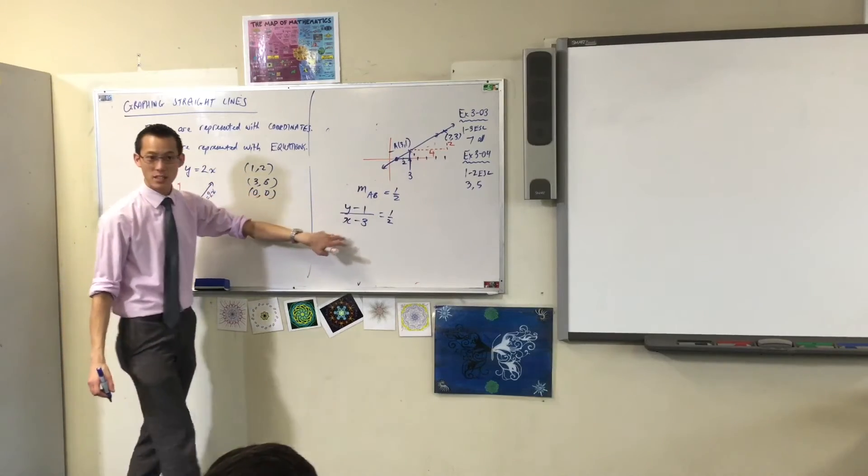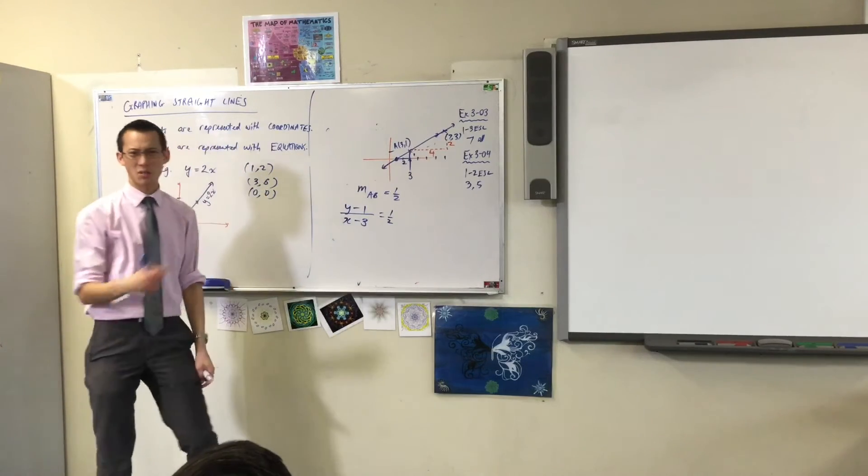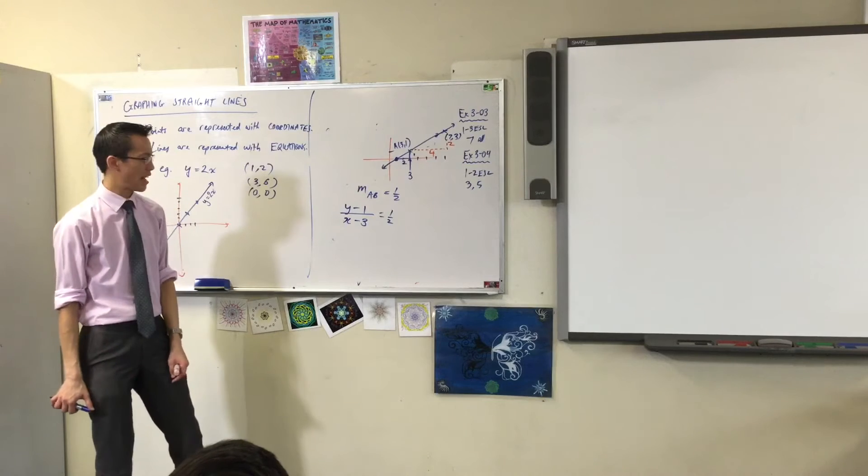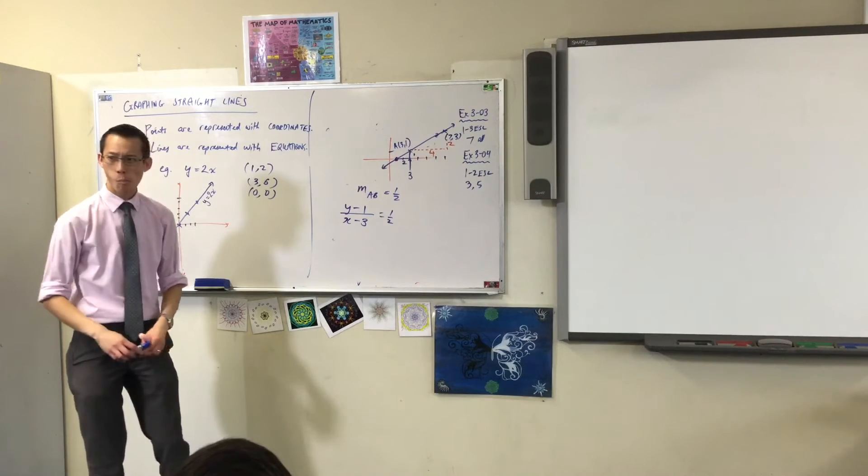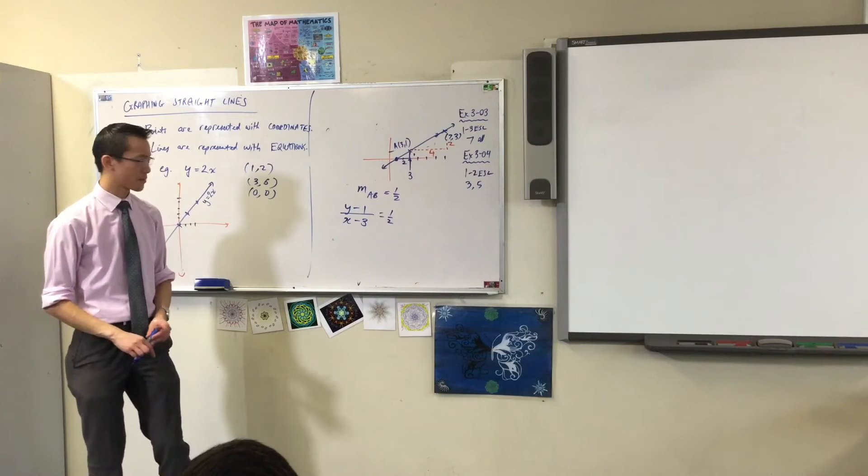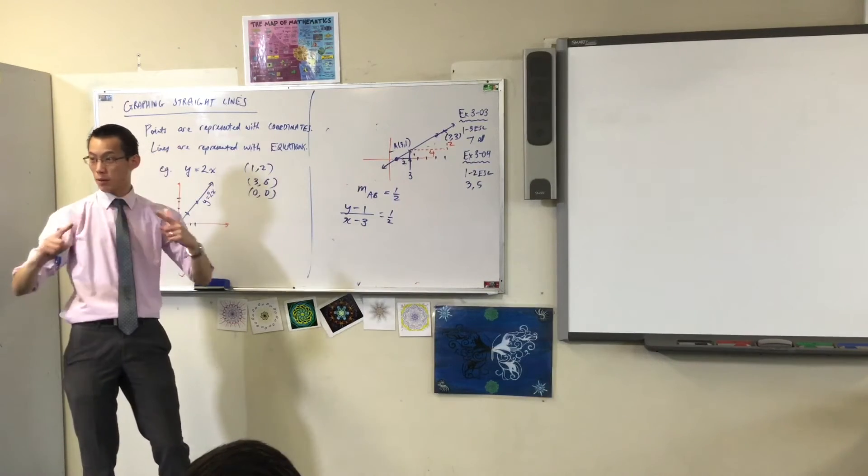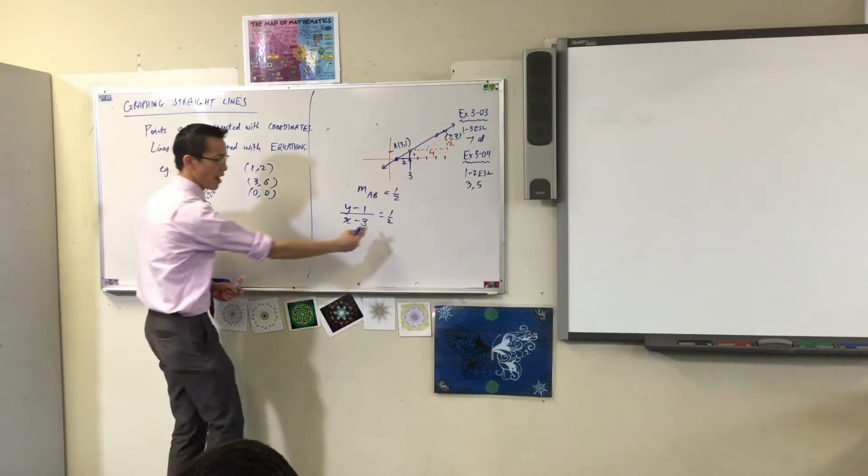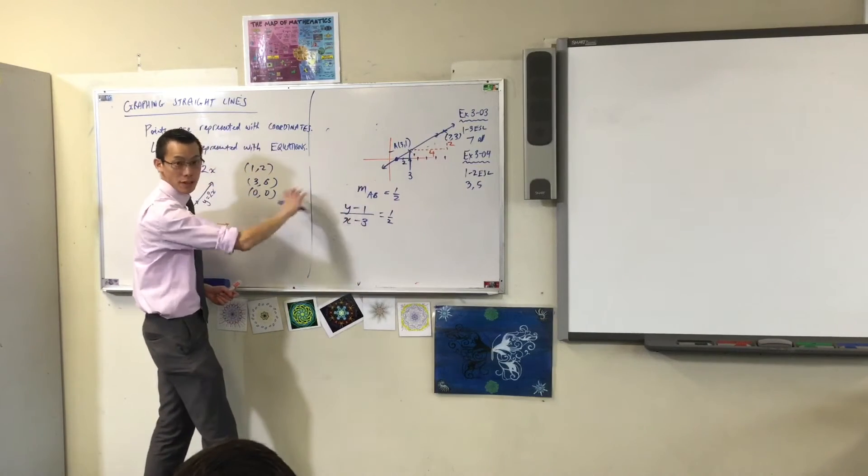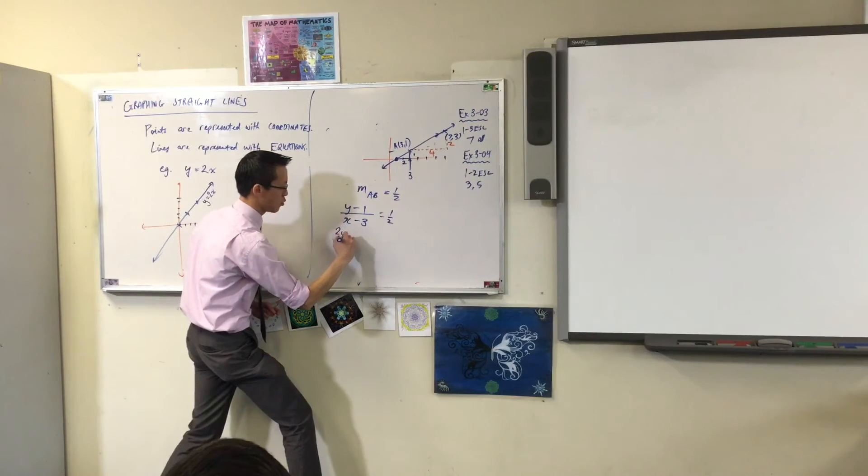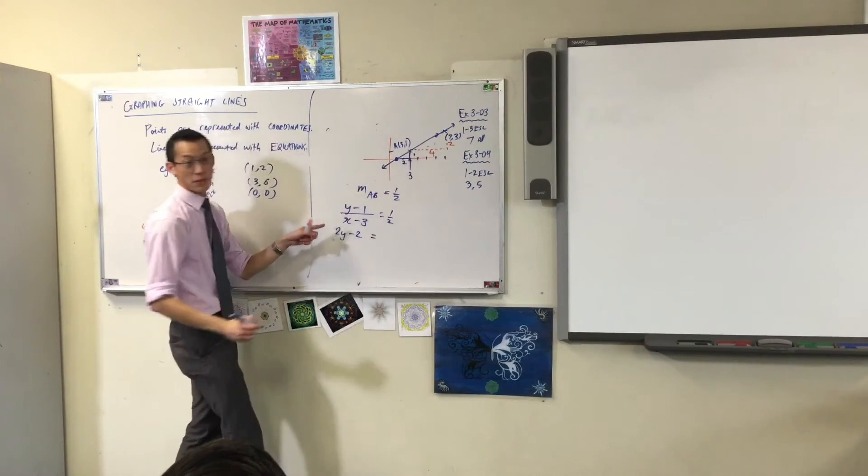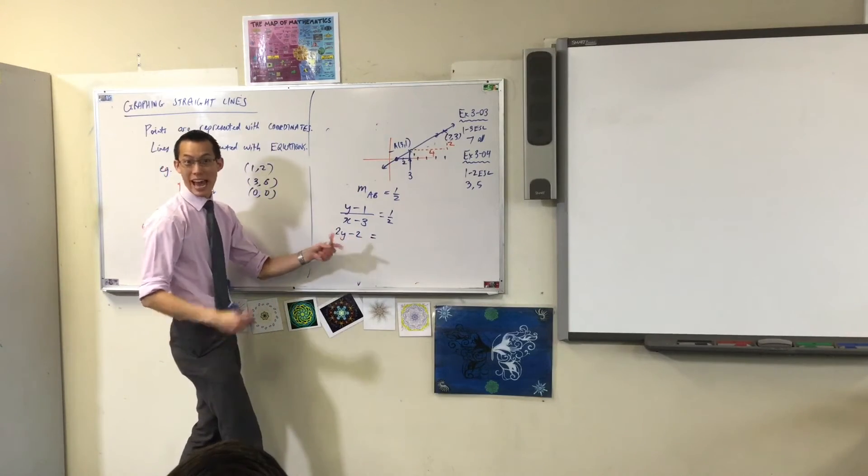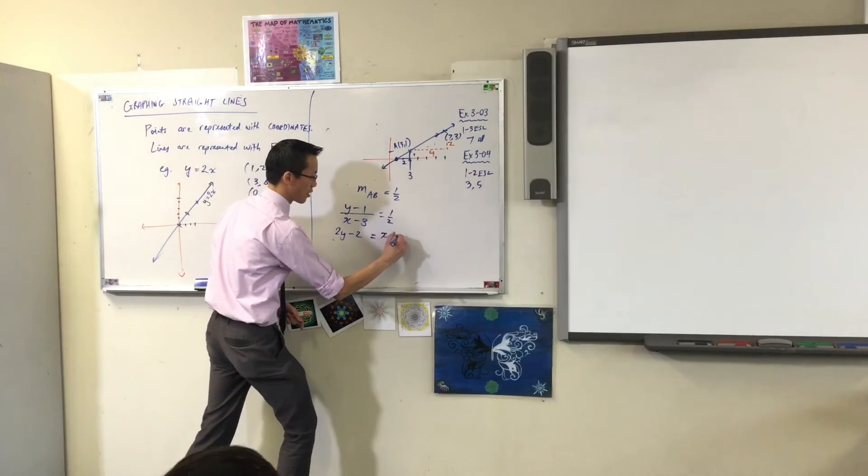See, I'm comparing Y's with Y's and X's with X's. What do I do with this? I want to write it. It's a bit of a mess right now. How could I simplify this a little bit? Any suggestions? I can cross multiply. You guys have seen that before. Right? I can multiply everything by 2. So, that leaves me with 2Y minus 2 over there. And then I'll multiply everything by X minus 3 as well. That leaves me with that.